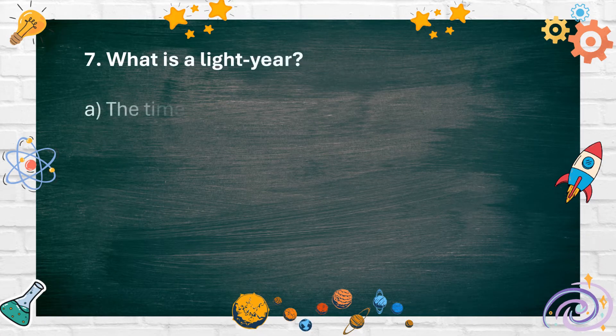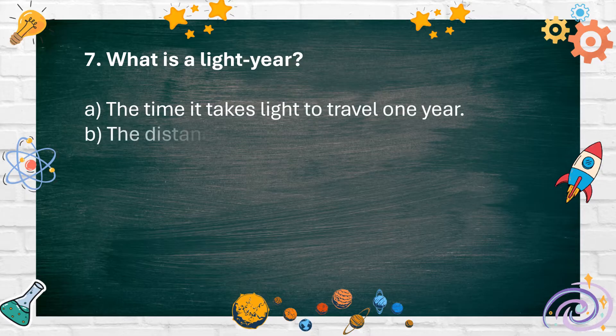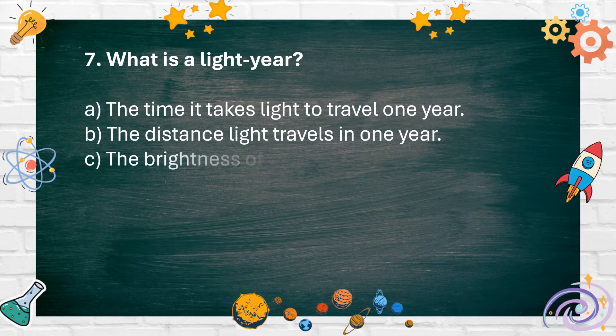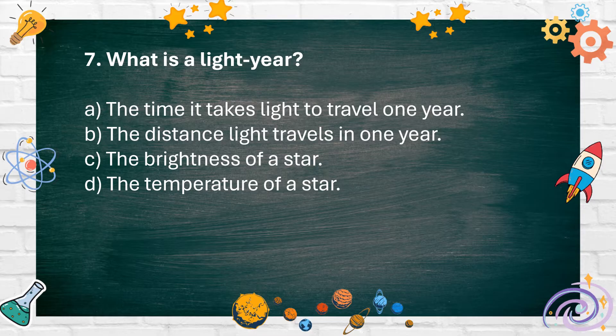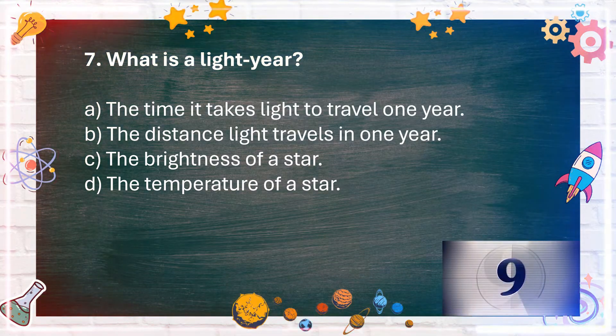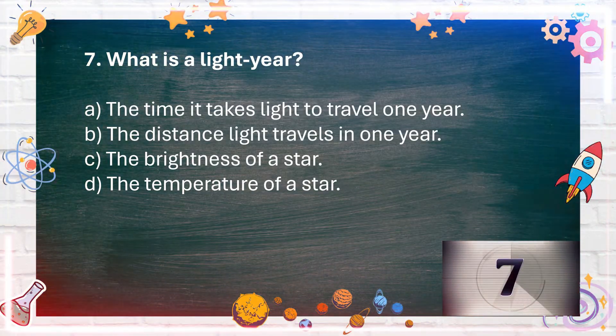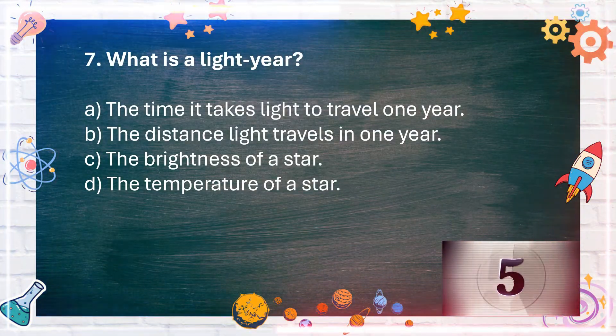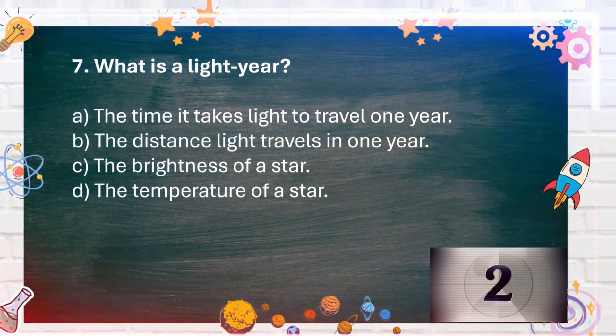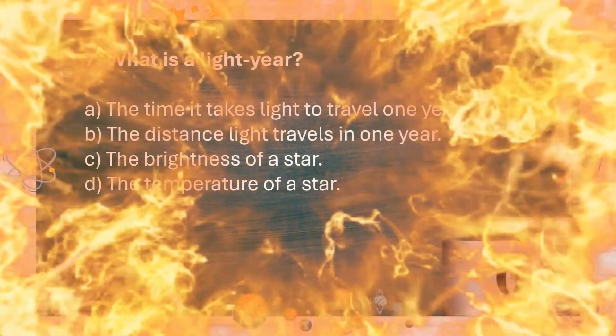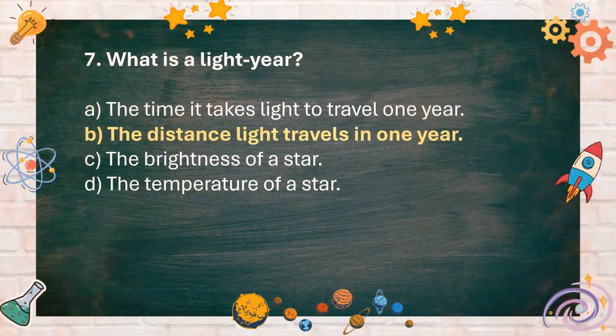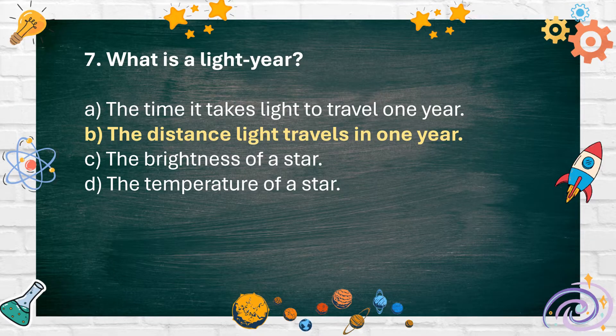Number 7: What is a light year? A. The time it takes light to travel one year, B. The distance light travels in one year, C. The brightness of a star, D. The temperature of a star. The answer is B. The distance light travels in one year.